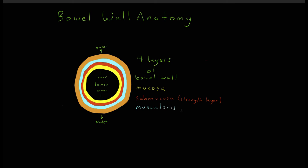The next layer is the muscularis propria. The outermost layer is the serosa. In the nomenclature of bowel anatomy, the two outermost layers — the serosa and the muscularis propria — are sometimes described together as a single seromuscular layer. The two innermost layers of mucosa and submucosa are sometimes described as the mucosal layers. This concept of inner layers and outer layers will be important when we conceptualize the techniques of bowel anastomosis.